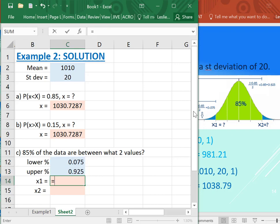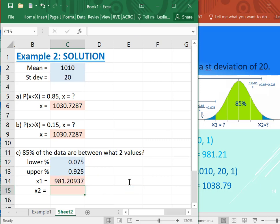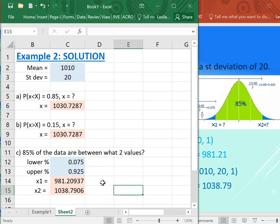And then to get our X1 here, just norm.inv of this 0.75, grab the mean, grab the standard deviation. And to get X2, same idea, now, because I didn't lock the lower reference, I can just copy this down. So just grab the C13, the mean, the standard deviation, do the norm.inv, and that gives us our X2, which is 1,038.